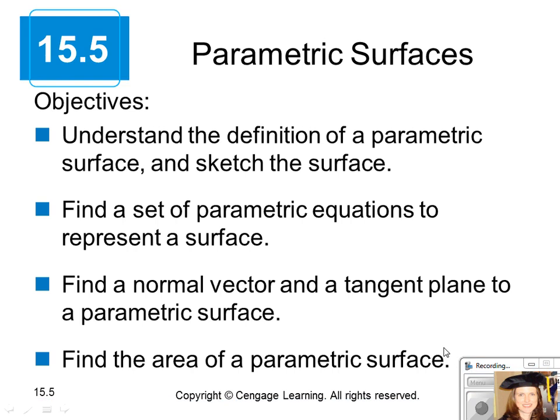Chapter 15, Section 5 is on Parametric Surfaces. Our objectives are to understand the definition of a parametric surface and sketch the surface, find a set of parametric equations to represent a surface, find a normal vector and a tangent plane to a parametric surface, and find the area of a parametric surface.